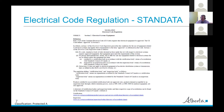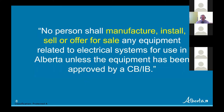Hopefully we see something on that soon. As soon as I see it, I'll be letting the Safety Codes Council know. To repeat: no person shall manufacture, install, sell, or offer for sale any electrical equipment in Alberta unless it's been approved by a CB or an IB — that's a certification body or an inspection body — again, in the context of equipment, not installations.